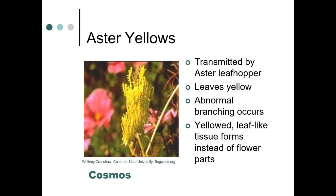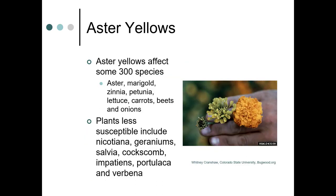Aster yellows is transmitted by the aster leafhopper. The leaves will be yellow, abnormal branching occurs, and a yellowed leaf-like tissue forms instead of flower parts — this example is actually a cosmos. Aster yellows affects several species in the Asteraceae, but not just Asteraceae. Some of the less susceptible plants include nicotiana, geraniums, and impatiens.